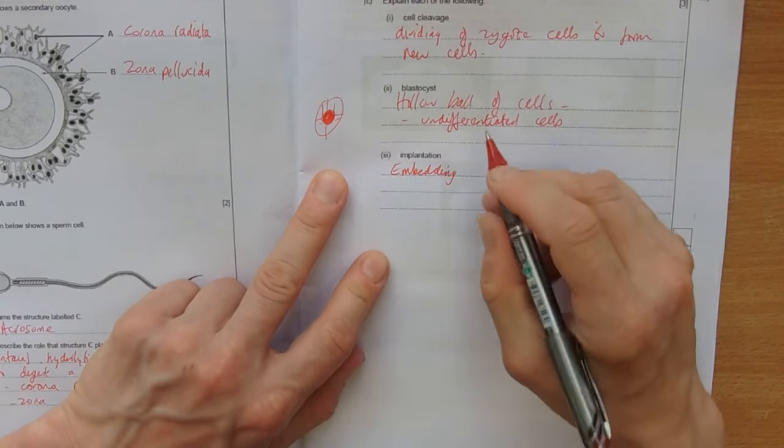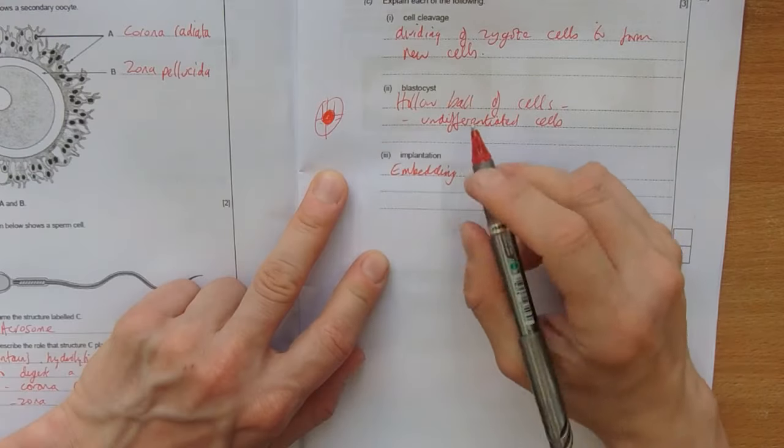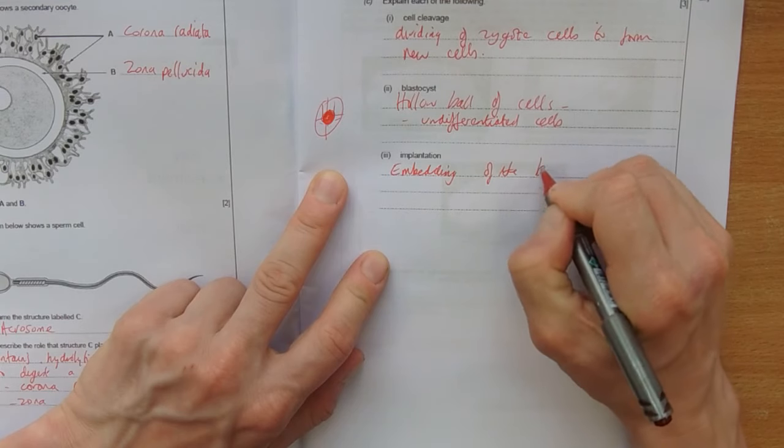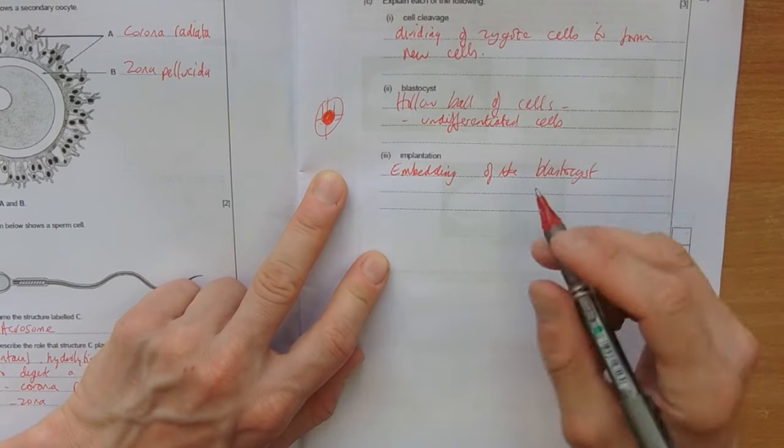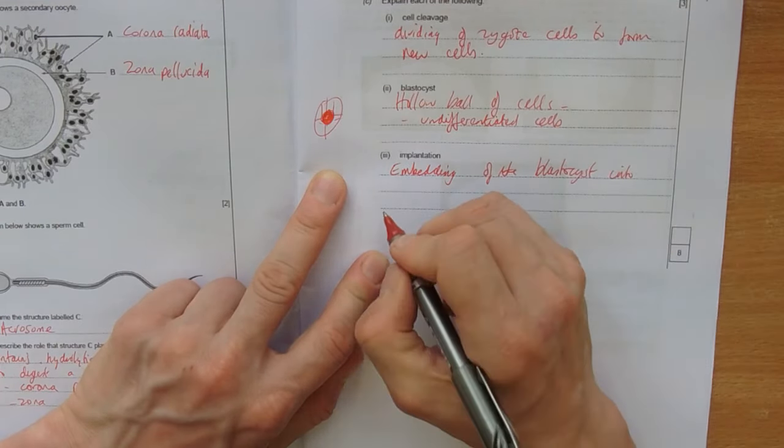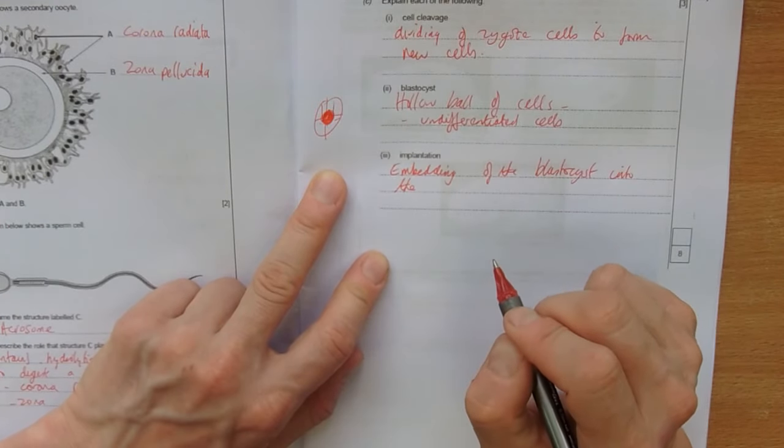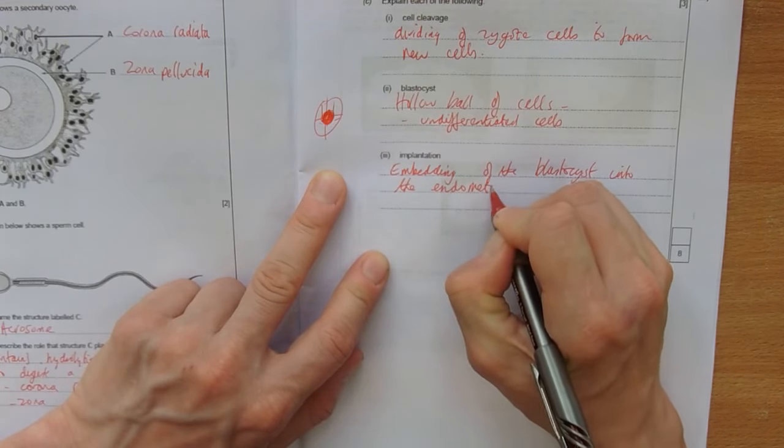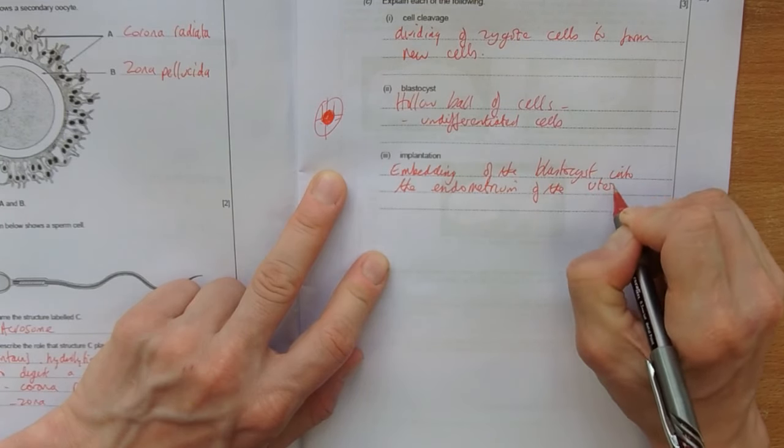So we're trying to use all the right words. You could say burying or implanting, but that's repeating the question. So embedding of the blastocyst. So it's still a blastocyst into the - you can either say uterine lining or endometrium. Endometrium of the uterus.